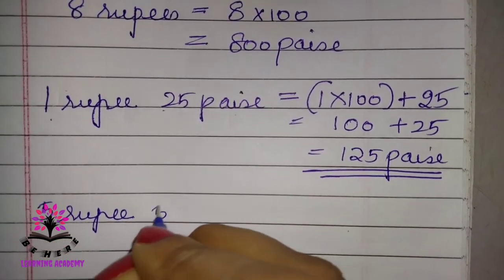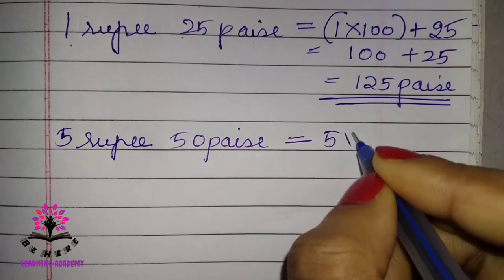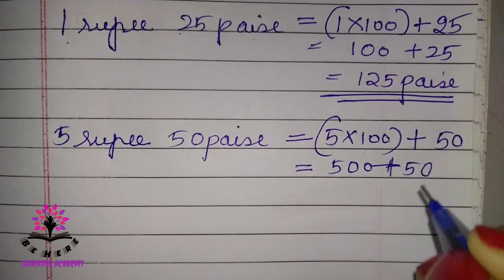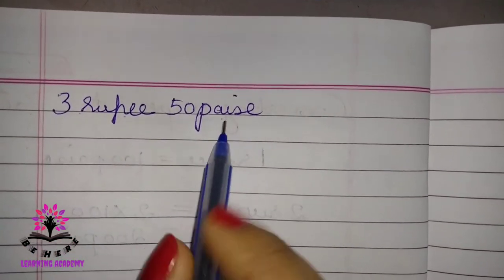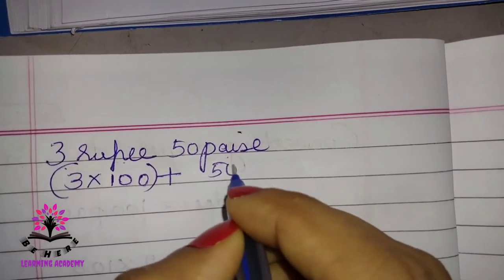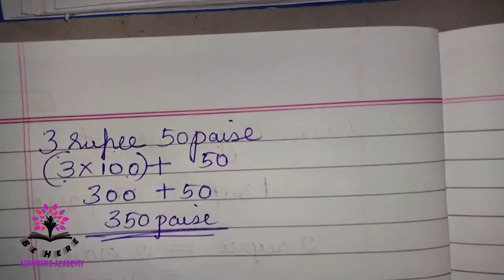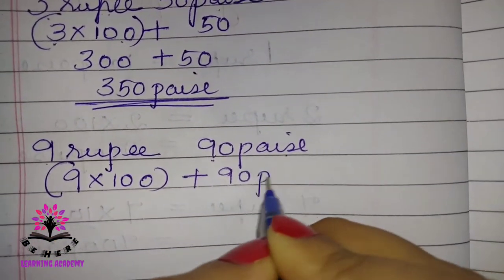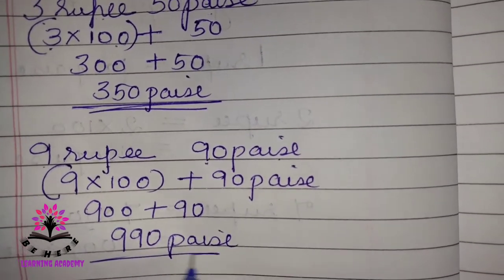For 5 rupees 50 paisa: (5 × 100) + 50 = 500 + 50 = 550 paisa. For 3 rupees 50 paisa: (3 × 100) + 50 = 300 + 50 = 350 paisa. For 9 rupees 90 paisa: (9 × 100) + 90 = 900 + 90 = 990 paisa.